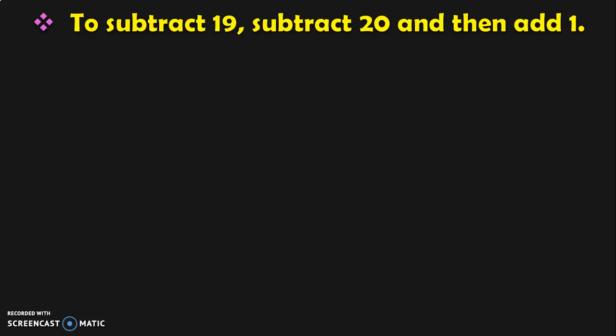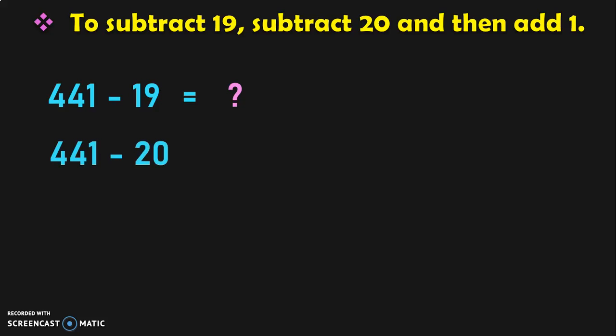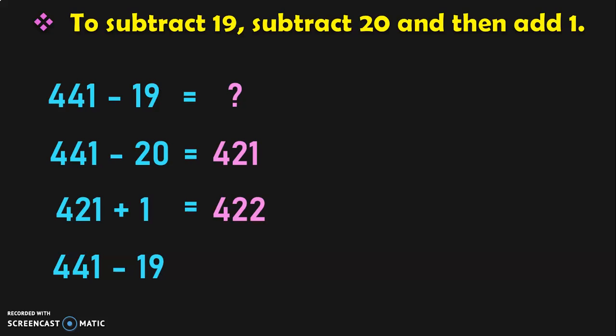To subtract 19 from a number, subtract 20 first and then add 1. For example, 441 minus 19: first, 441 minus 20 gives you 421. Next, 421 plus 1 gives you 422. So, the answer for 441 minus 19 is 422.